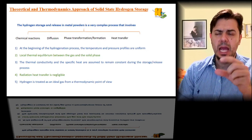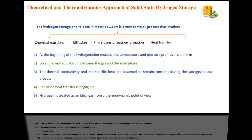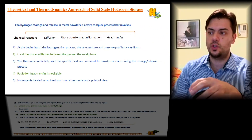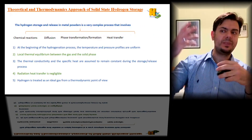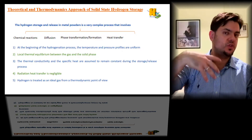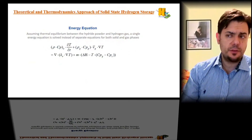The fourth assumption is quite valid at low temperatures: radiation due to heat transfer is negligible. Finally, depending on the pressure when describing hydrogen compression numerically, hydrogen is treated as an ideal gas from a thermodynamic point of view — though this is not always valid.